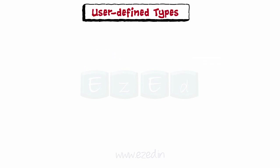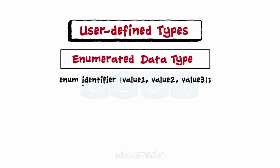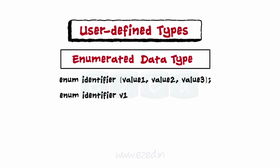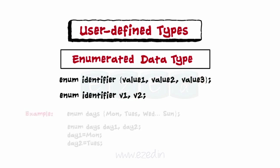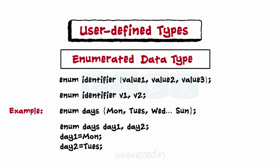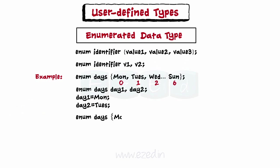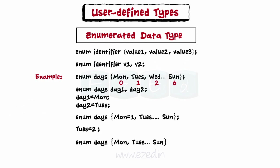Another user-defined type is the enumerated data type. The identifier is a user-defined enumerated data type which can be used to declare variables that can hold one of the values listed within braces, called enumeration constants. For example, days is the user-defined type with enumeration constants Monday, Tuesday, and so on. Day1 and day2 are enumerated variables where day1 is given Monday and day2 is assigned Tuesday. The compiler automatically assigns digits 0, 1, and so on to the enumeration constants. We can change the assignment of digits by explicitly specifying them, and other values would be automatically assigned. We can also combine the declaration and definition.